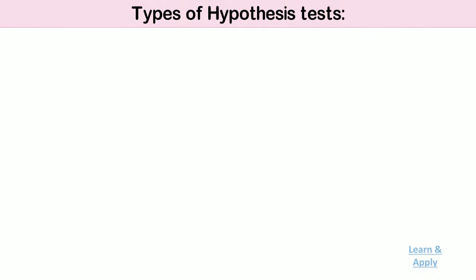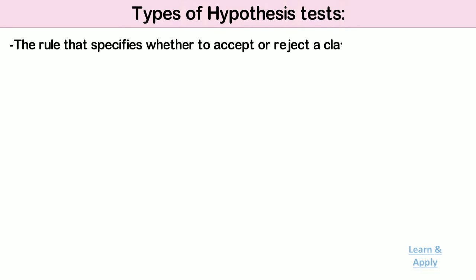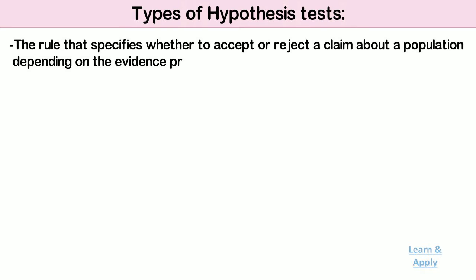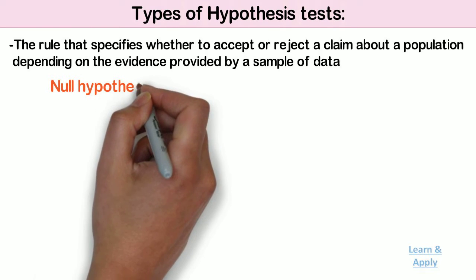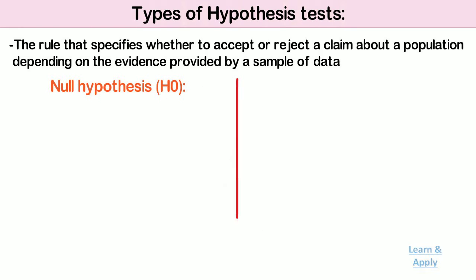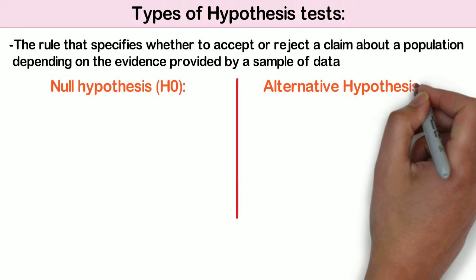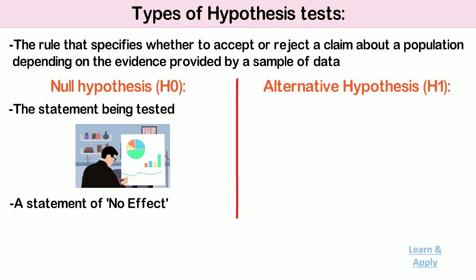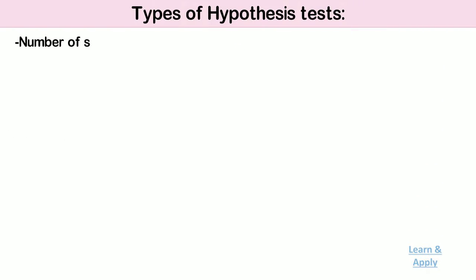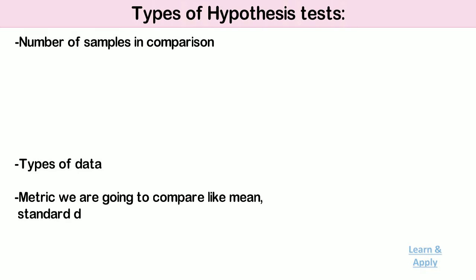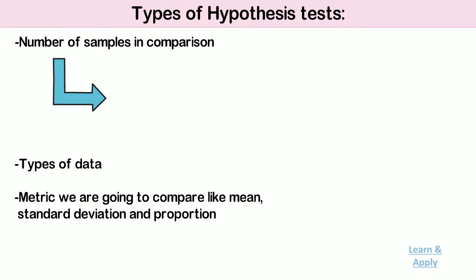Types of Hypothesis Test. As we know, a hypothesis test is a rule that specifies whether to accept or reject a claim about a population depending on the evidence provided by a sample of data. A hypothesis test examines two opposing hypotheses about a population: the null hypothesis and the alternative hypothesis. In each test, we compare two things to draw some conclusion. Based on the number of samples in comparison, type of data, and metric we are going to compare — like mean, standard deviation, and proportion — there are multiple types of hypothesis tests. Based on the number of samples used in hypothesis testing, there are three main types of tests.